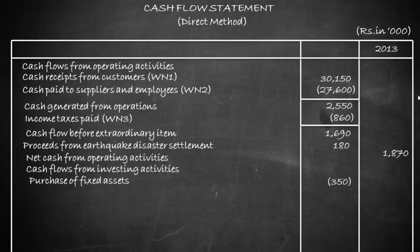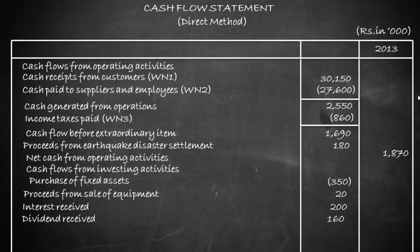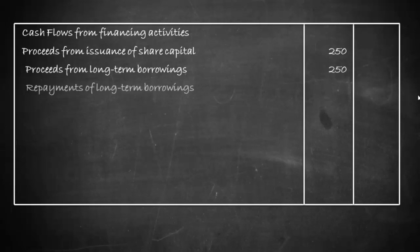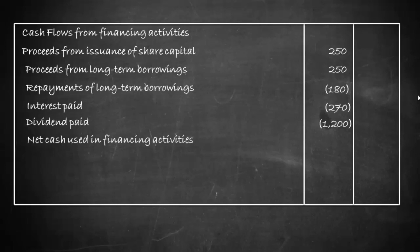Cash flows from investing activities: purchase of fixed assets is an outflow of 350; proceeds from sale of equipment are 20; interest received is 200; dividend received is 160. Net cash from investing activities is 30. Cash flows from financing activities: proceeds from issuance of share capital 250; proceeds from long-term borrowings 250; repayment of long-term borrowings 180; interest paid 270; dividend paid 1,200. Net cash used in financing activities is 1,150 — an outflow.